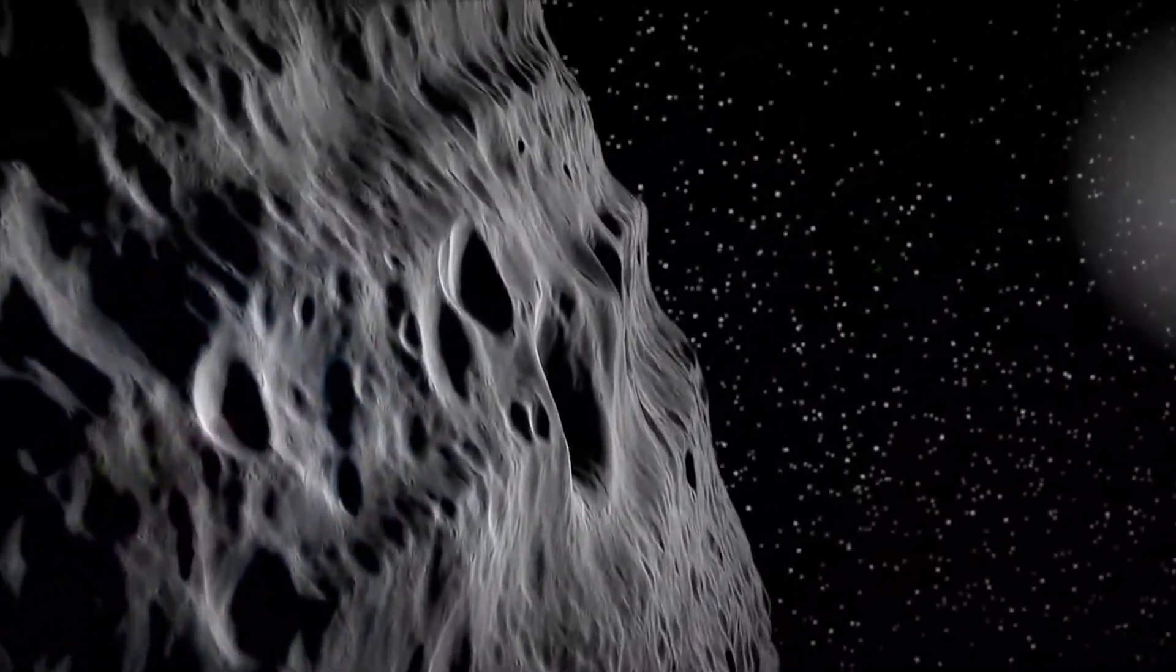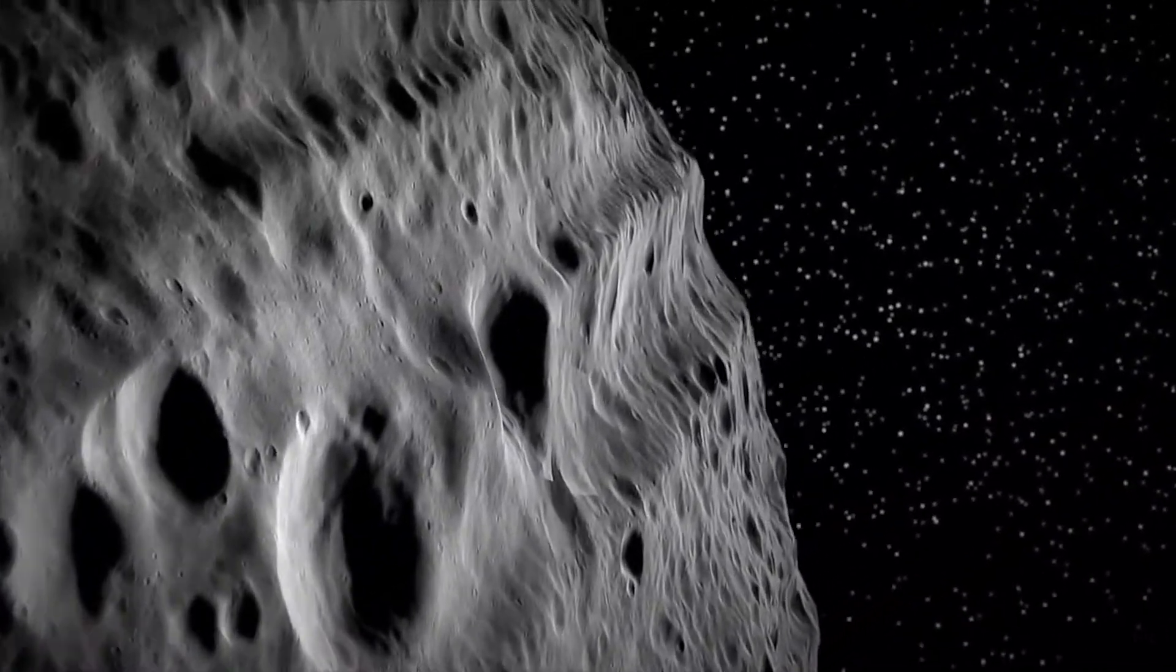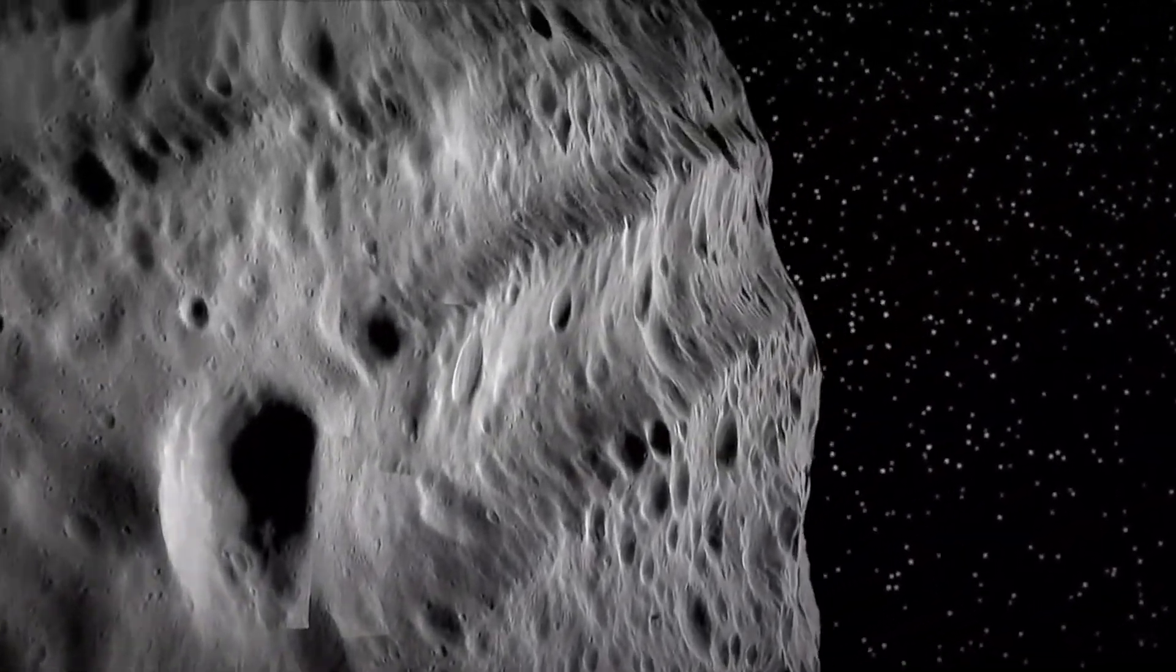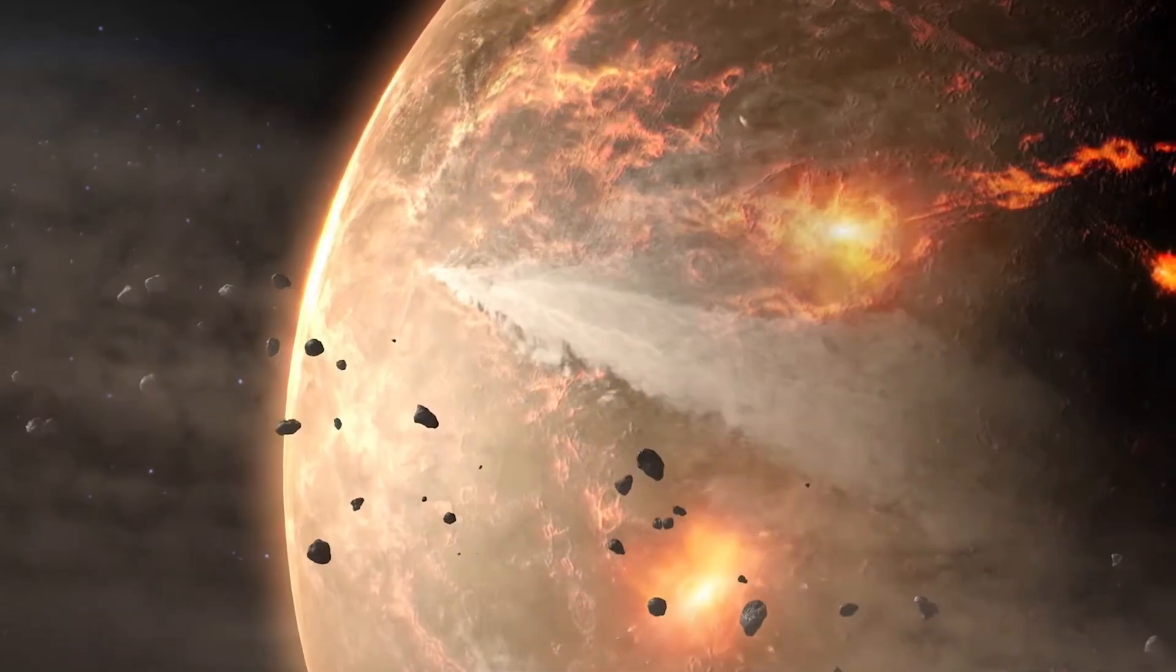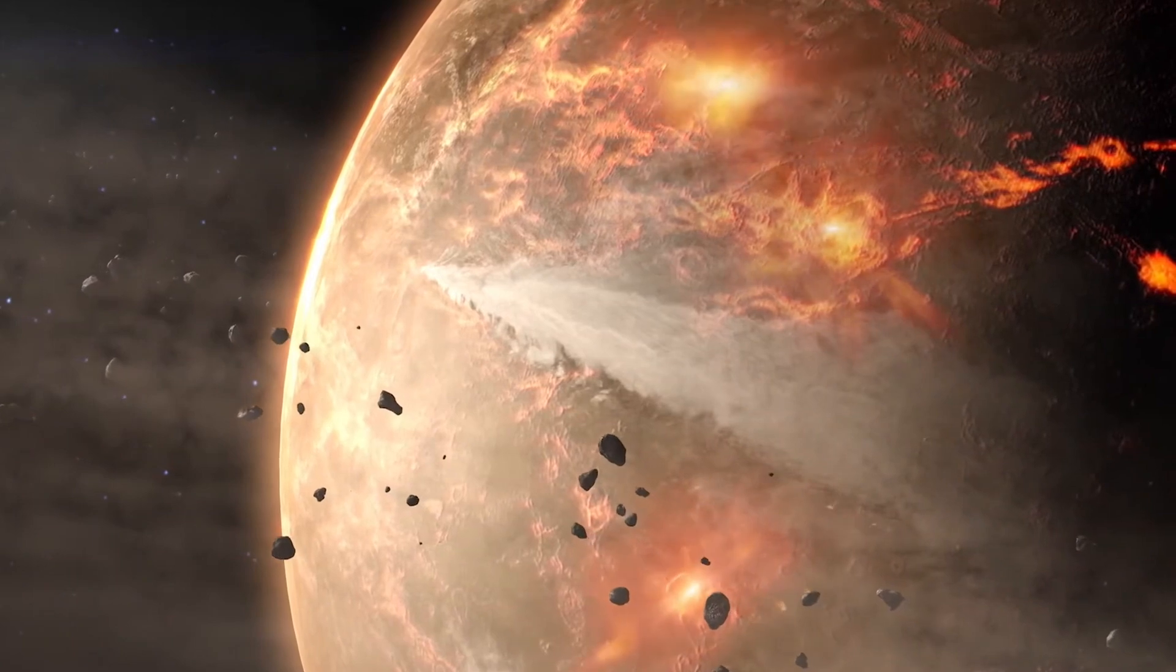Vesta is the second largest object in the asteroid belt. Its surface is full of craters, which showed that it may have been hit by many things in the past. Isotopes were spread out in the same way in the rocks from Vesta as they are on Earth. This doesn't necessarily mean that Vesta was the source of our water, but it does mean that an object or objects similar to Vesta could be to blame.